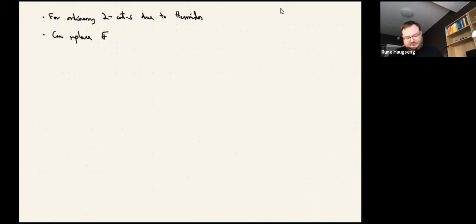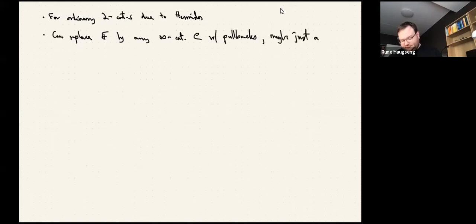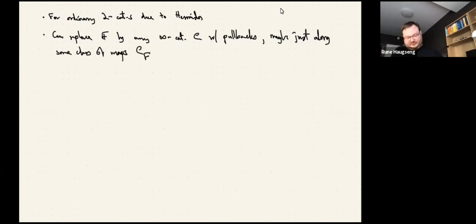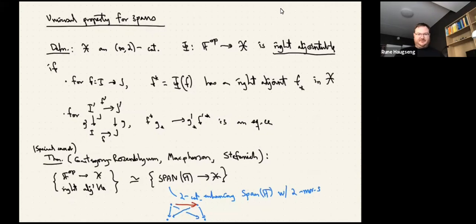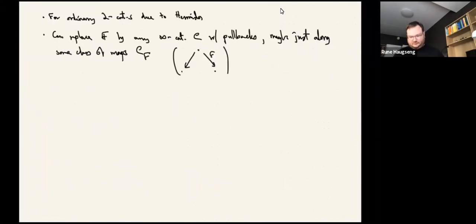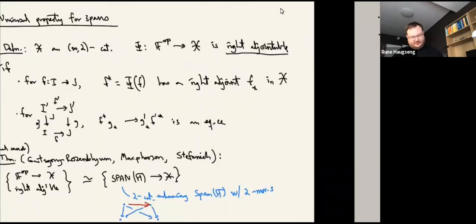This result holds more generally: you can replace F by any ∞-category C with pullbacks, possibly only along some class of maps C_f. The idea is that instead of all spans, you look at spans whose forward map lies in the class f, requiring that pullbacks of arbitrary maps along maps in f exist so that composition by pullback still works. The universal property then gives right adjoints exactly for those maps in the class f.